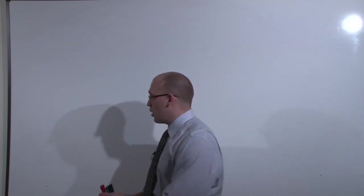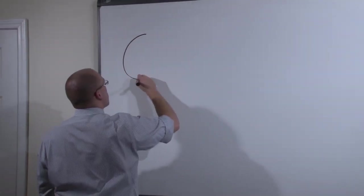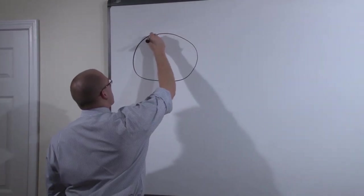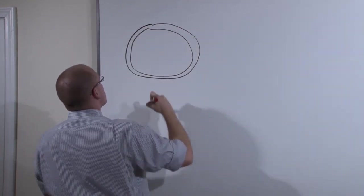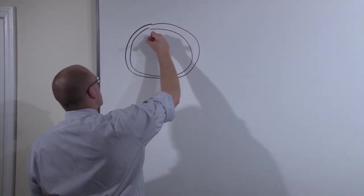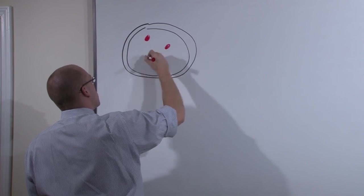So in order to understand all of the different kinds of ovarian cancer, you have to be able to draw a cross-section of the ovary with the epithelial layer on the outside, germ cells within the stroma.